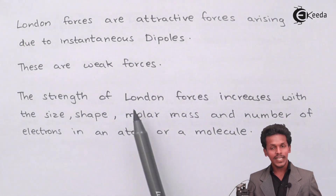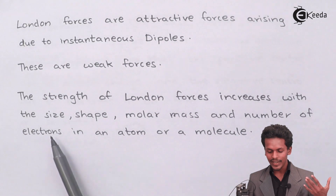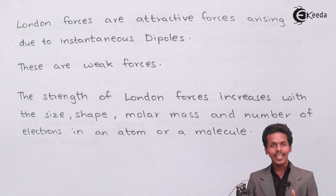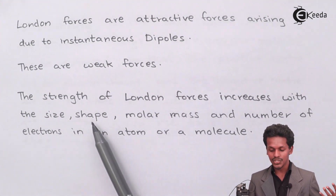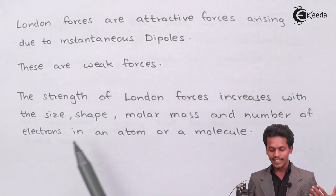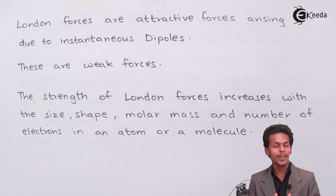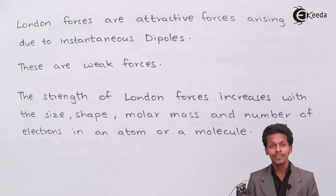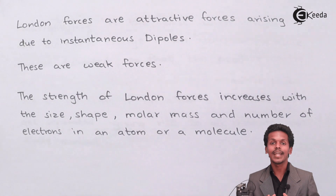The strength of the London force increases with the size, shape, molar mass, and number of electrons in the atom or molecule. If the molecule is larger, has a larger size or shape, higher molar mass, and more electrons, then there are greater possibilities for London force arising due to polarizability. This will lead to a stronger London force of interaction, making the two molecules interact more strongly.